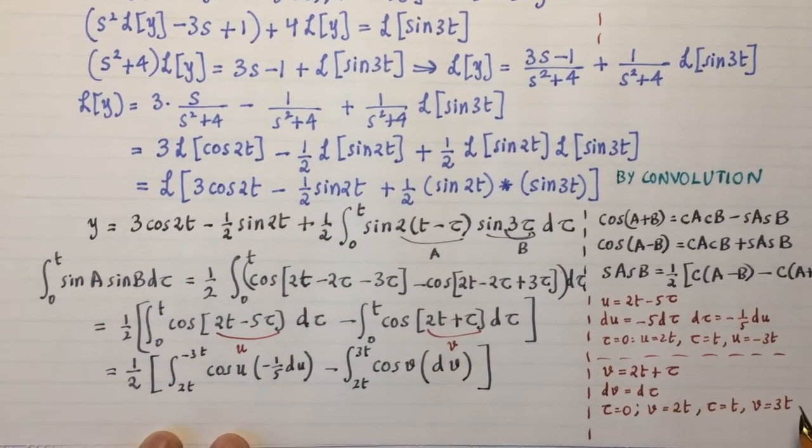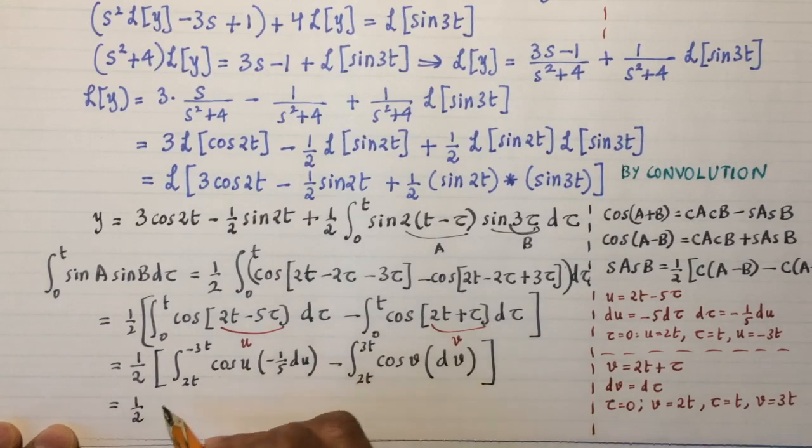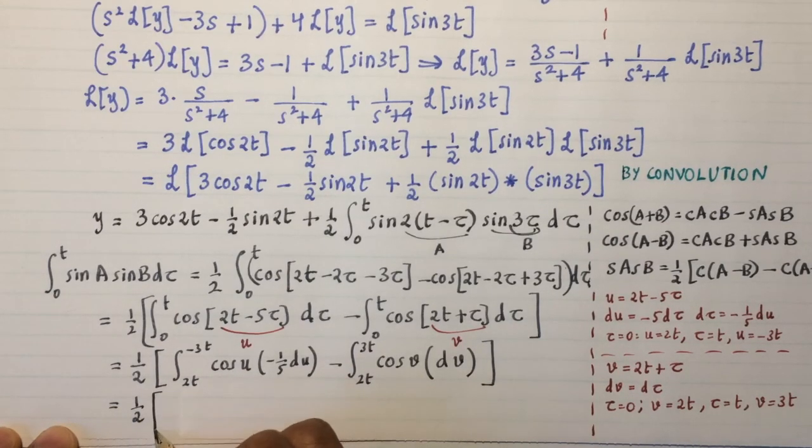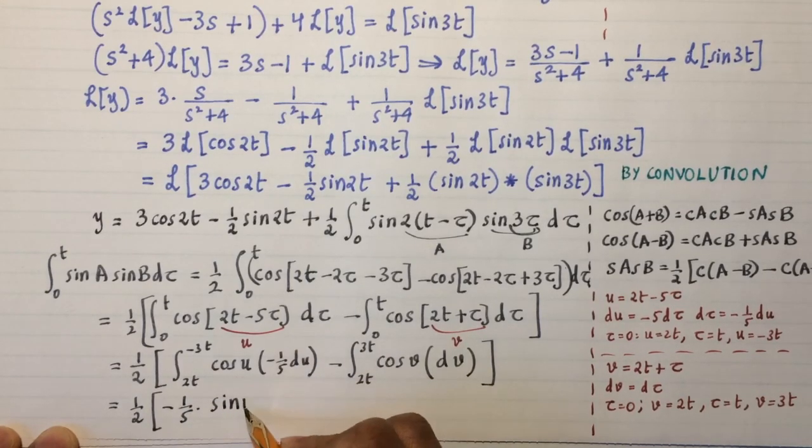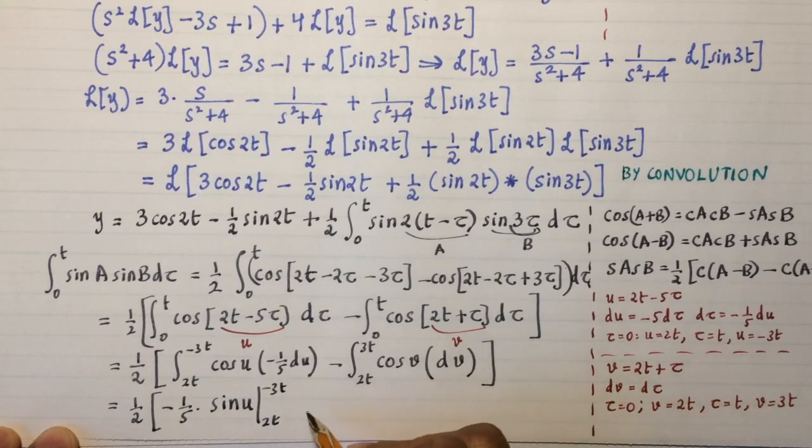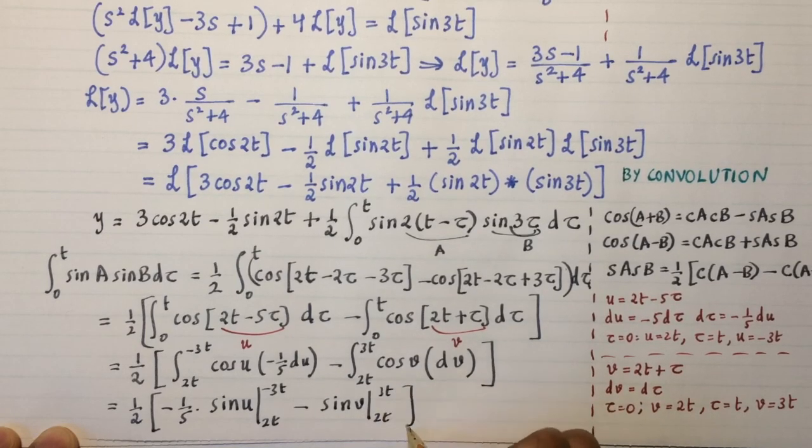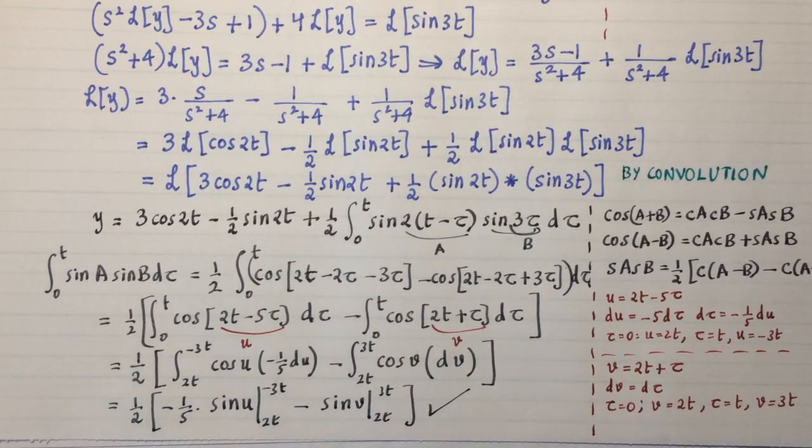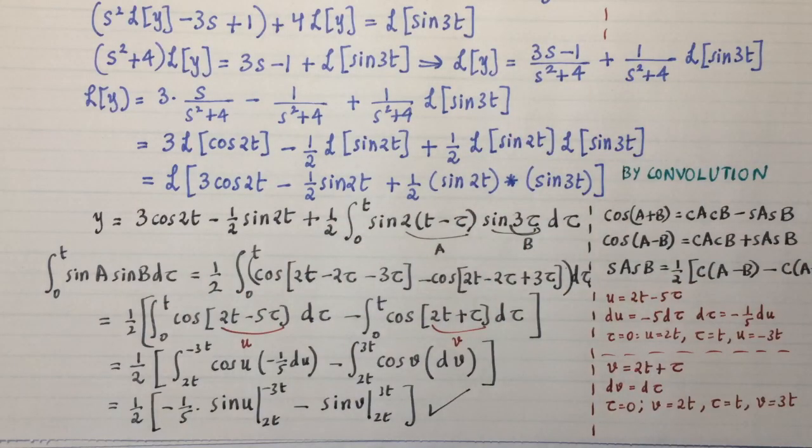Now, these two integrals are now extremely trivial to evaluate. This is going to be one-half times negative one-fifth sine of u from 2t to negative 3t. And this one is going to be sine of v from 2t to 3t. And so, we have solved this problem. And then, you can put everything together to write the final solution to this problem.